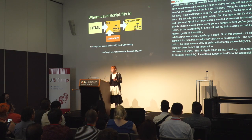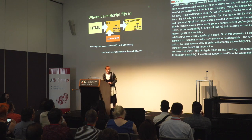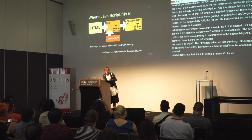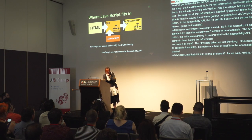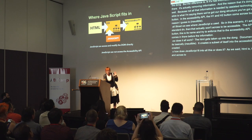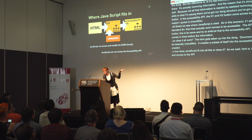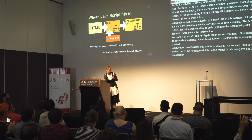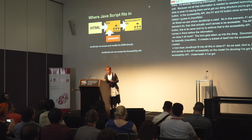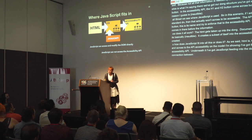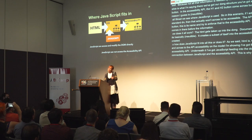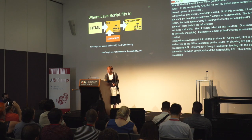So how does JavaScript fit into all this? The DOM is built from HTML and CSS and builds across to the accessibility API. In the model on screen, I've got HTML feeding into the DOM, the DOM feeding into the accessibility API, and JavaScript feeding into the DOM underneath. There is no connection between JavaScript and the accessibility API. This is why the myth was created that JavaScript isn't accessible — JavaScript is accessible, it just can't talk directly to the accessibility API.